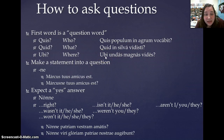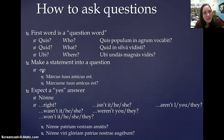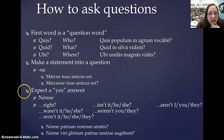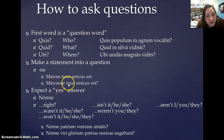The second way you can ask a question in Latin is to make a statement into a question. You do this by adding the enclitic syllable — enclitic just means it's added onto the end of a word — onto the first word of the sentence. For example, the statement Marcus tuus amicus est becomes the question Marcusne tuus amicus est.